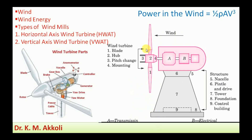The horizontal axis wind turbine consists of the following parts: first, the blade; second, the hub; third, the pitch change mechanism — the blade angle can be varied depending on requirement; fourth, the blades mounted on the hub; fifth, the nacelle, which accommodates the gearing system, conversion system, generator, and coupling.